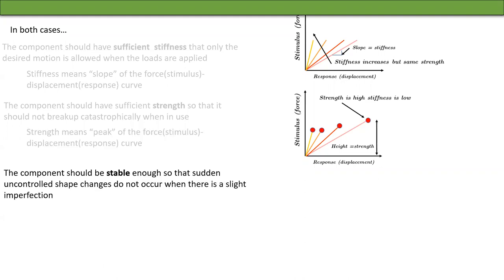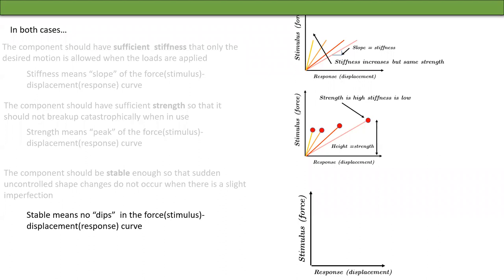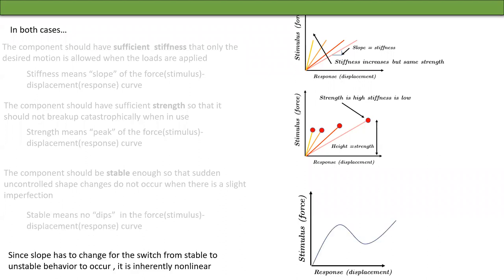The component should be stable enough so that sudden uncontrolled shape changes do not occur when there is a slight imperfection. Stable means no dips in the force displacement curve. Since slope has to change for the switch from stable to unstable behavior to occur, stability is an inherently nonlinear response.